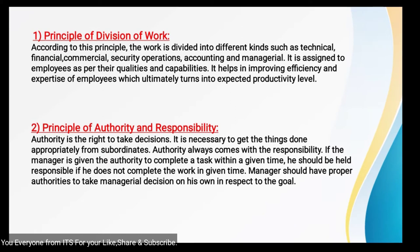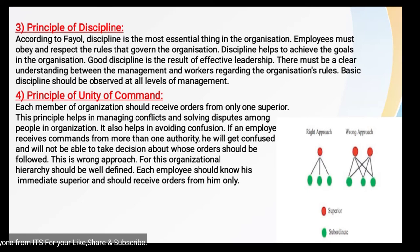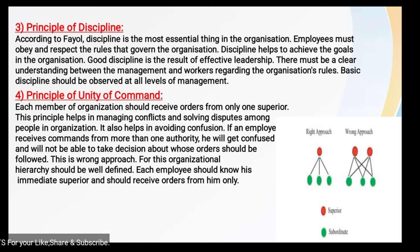Principle number three is Discipline. Discipline is one of the most essential things in an organization. Without discipline, nothing can be achieved. Every employee, worker, superior, and subordinate must follow discipline. It is through discipline and clear understanding between management and workers that organizational goals can be achieved. Basic rules and regulations must be maintained.